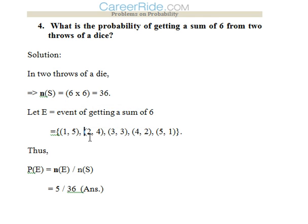So the event of getting a sum of 6 would be in 5 cases. That would be if we get 1 and 5, 2 and 4, 3 and 3, 4 and 2, or 5 and 1. So the total cases would be 5. The total sample space n(S) is 36, so 5 by 36 is the answer.